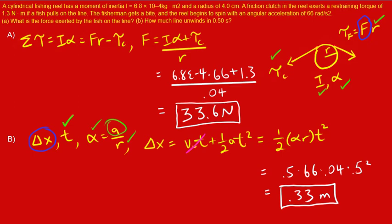Reality check: 0.33 meters is about a foot for us Americans. So you ask yourself, does a fishing line in half a second travel a foot? Yeah, give or take. A common occurrence on an exam is getting 33 or 330 instead. And so you think to yourself, that's not realistic — and that's a good red flag that you should go back and check your work.